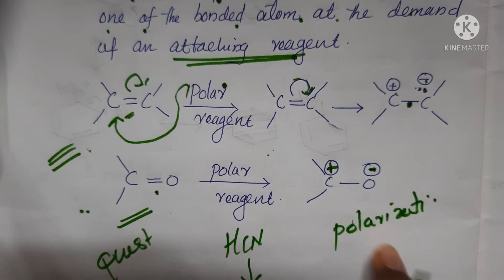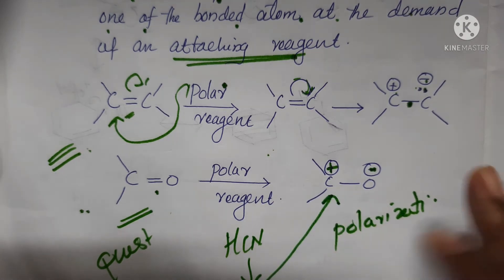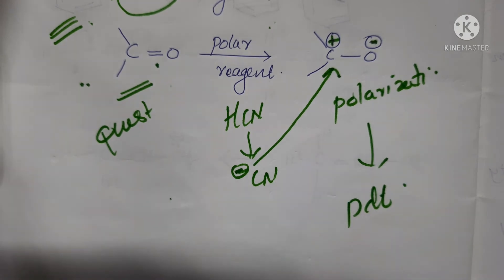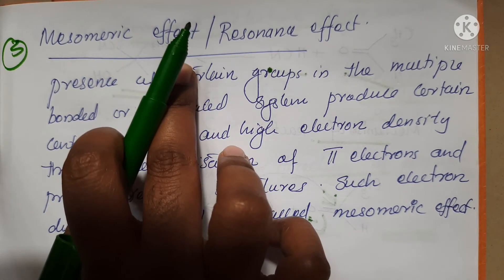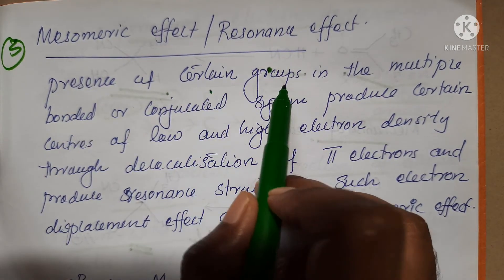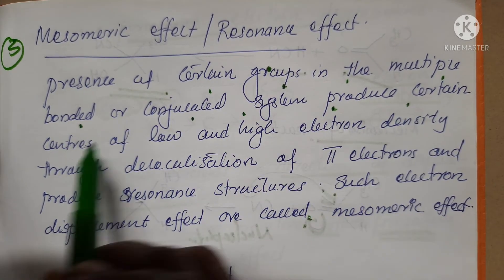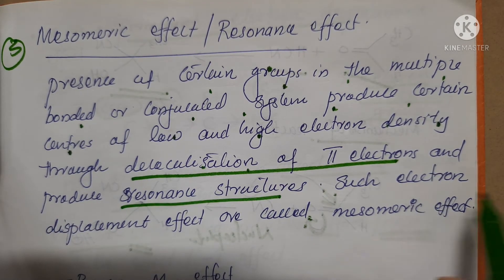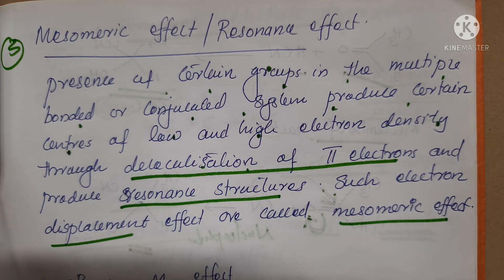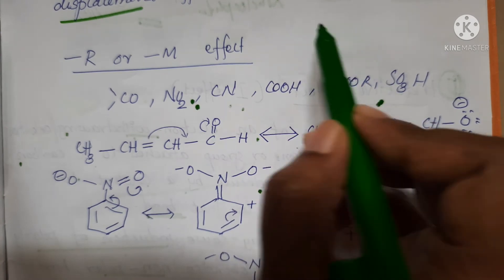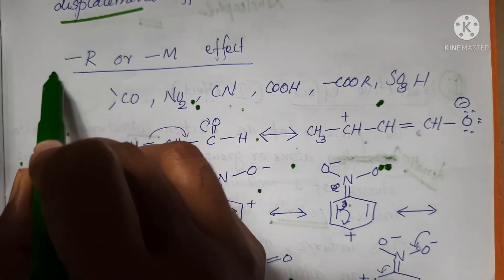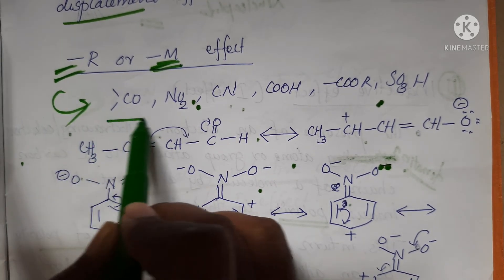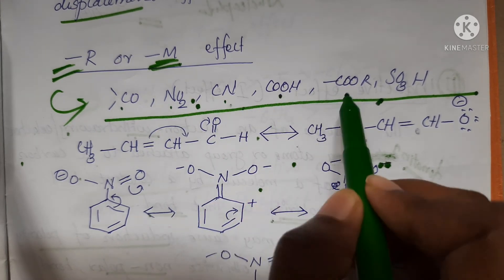The next effect is the mesomeric effect, also called the resonance effect. The presence of certain groups in multiple bonds or conjugated systems produces centers of low and high electron density through the delocalization of pi electrons, producing resonance structures. Such electron displacement is called the mesomeric effect. The two types are plus-R (or plus-M) and minus-R (or minus-M) effect. Groups such as CN, CO3H, and CO2H show the minus-M effect.